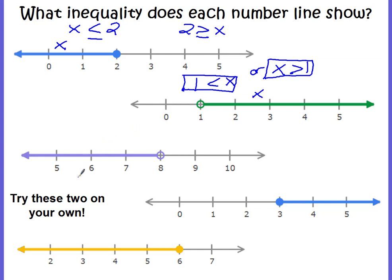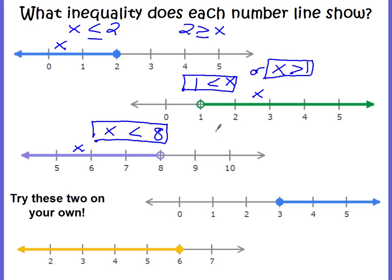In our third example, we're at 8. The circle is at the 8. Our x line is to the left of 8, so x is less than 8 — the alligator is going to eat the 8. Do we need to put the equal line? No, because our circle is not filled in. So the inequality would be x is less than 8. Or you could say that 8 is greater than x.